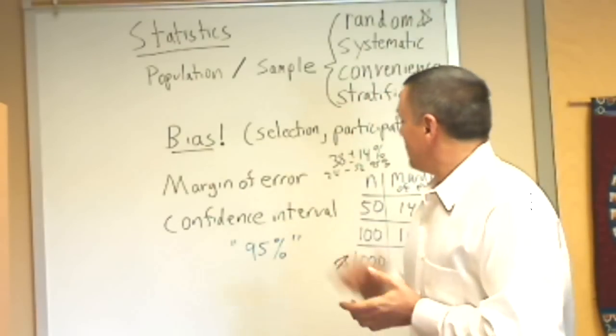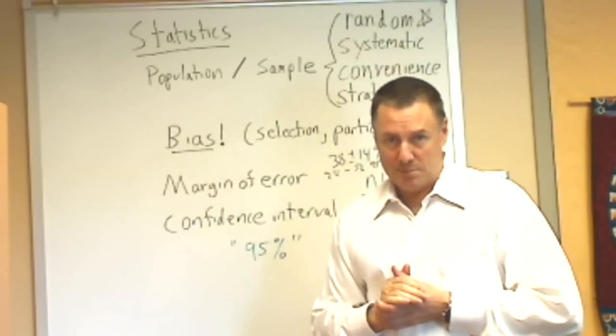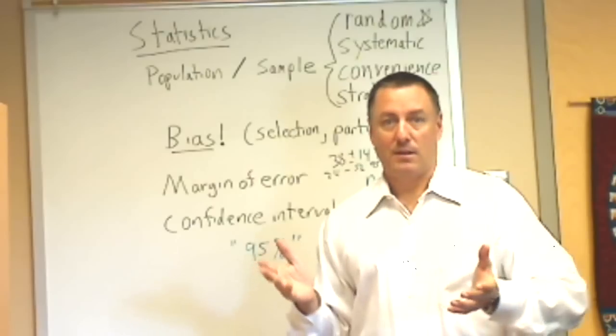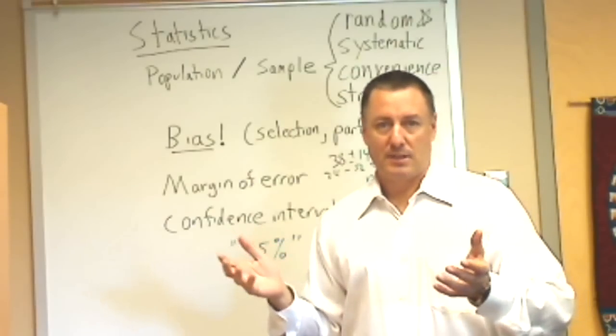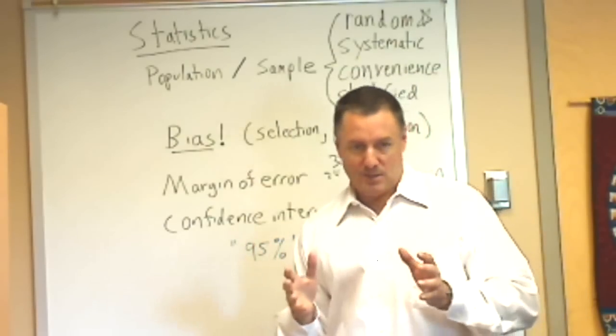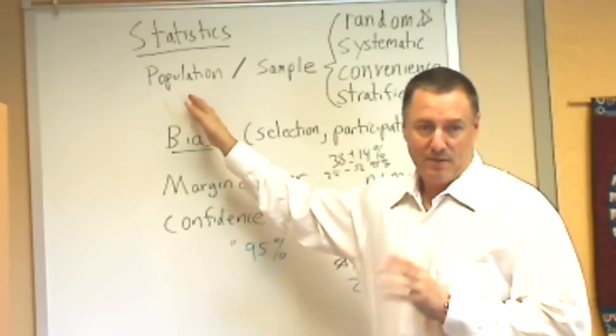The reason we like random samples is we don't tend to get a bias built in. For example, if the college is 20 percent Hispanic and I call 100 students at random, I ought to get around 20 Hispanic students. Different groups might have different opinions about the president, so we don't want to bias our survey by only interviewing one type of group.